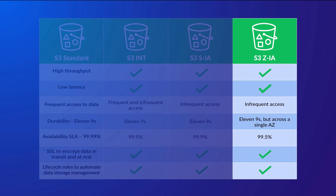S3 One Zone Infrequent Access. Being an infrequent storage class, it is designed for objects that are unlikely to be accessed frequently, and carries the same throughput and low latency. However, the durability, although remaining at 11 nines, only exists across a single availability zone. The objects will be copied multiple times to different storage locations within the same availability zone instead of across multiple availability zones. This results in a 20% storage cost reduction when compared to S3 Standard.